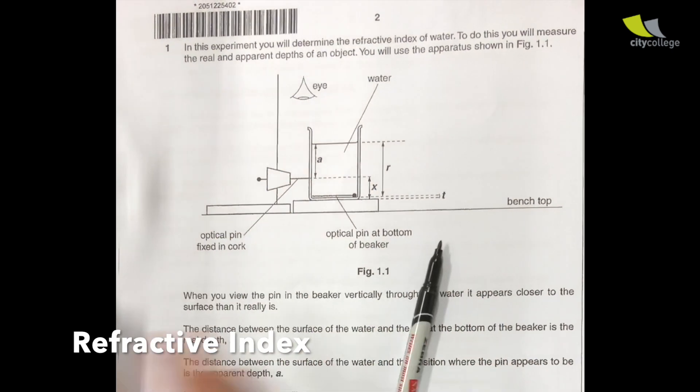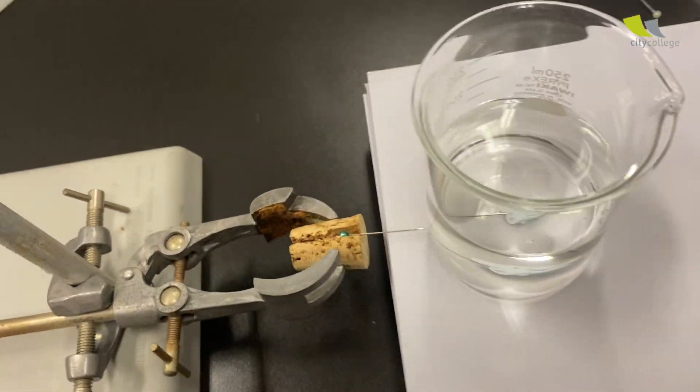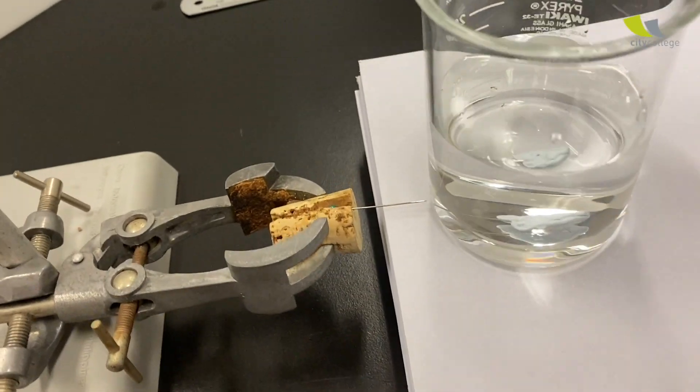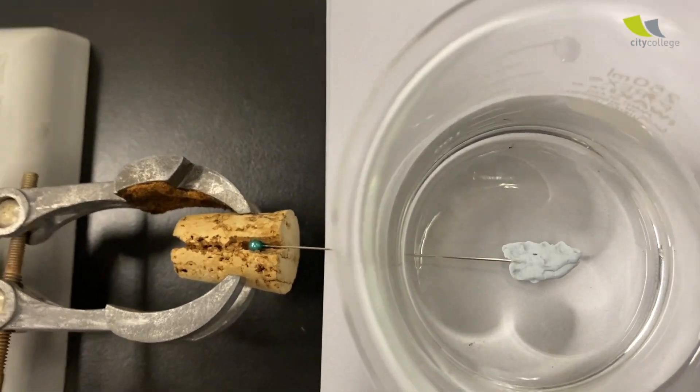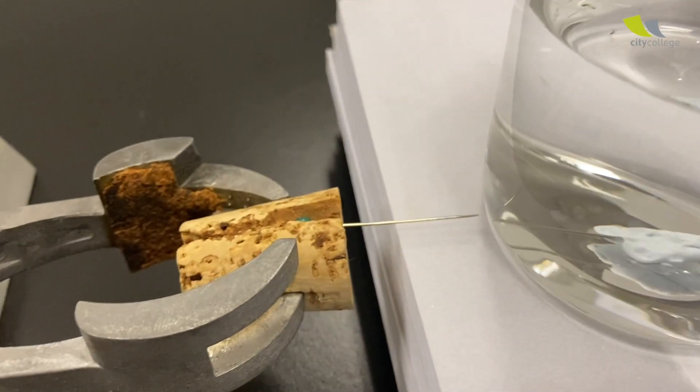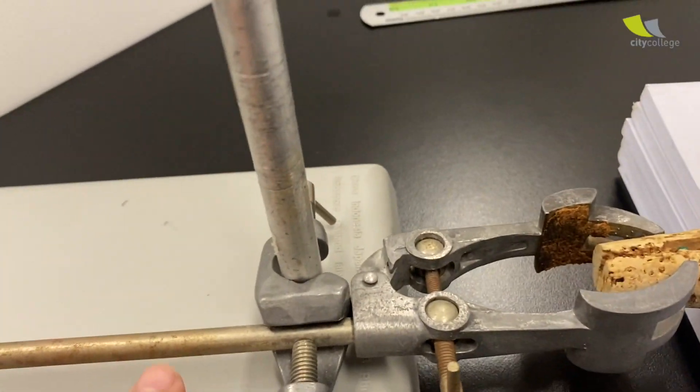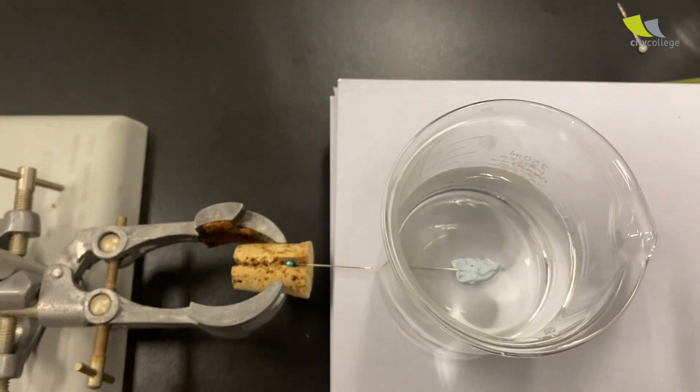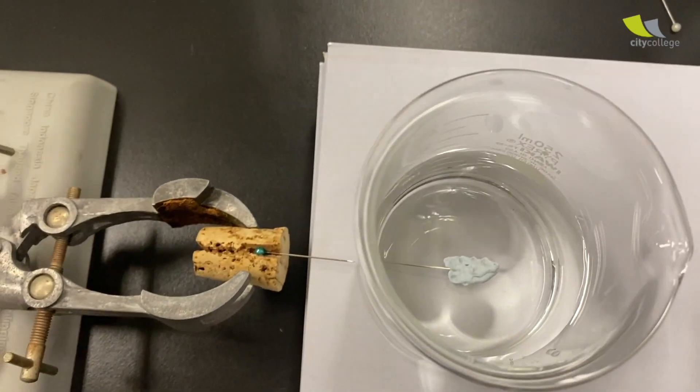So this is the diagram, this is the actual setup. You see over here, you have your beaker, water inside. Inside the water, there is actually a pin which we stick down through a Blu-Tack, so it's easier to shoot. Then we have the optical pin connected to a retort stand, so this one can move up and down. Before we continue, let's try to understand the concept first.